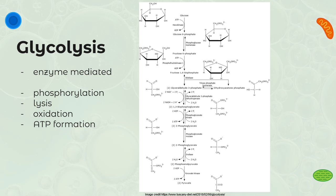Glycolysis is the first stage of respiration, both aerobic and anaerobic. Glycolysis occurs in the cytoplasm. It is metabolism because it is an enzyme-mediated set of chemical reactions — there are so many enzymes, such as hexokinase, phosphoglucose isomerase, and phosphofructokinase 1. Luckily, we do not need to memorize all the names of all the enzymes; we just need to know that there are a lot of enzymes involved. There are four main steps for glycolysis, the first one being phosphorylation.